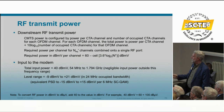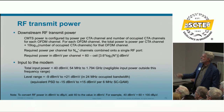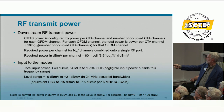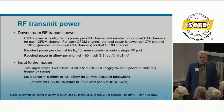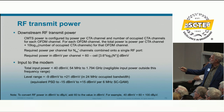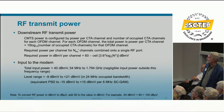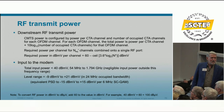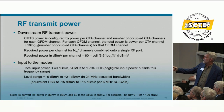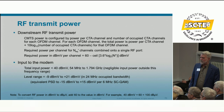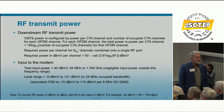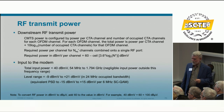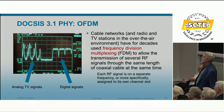Input to the cable modem: total input power must be less than 40 dBmV. The signal level range is -9 to +21 dBmV in a 24 MHz occupied bandwidth, which gives the equivalent power spectral density to -15 to +15 dBmV per 6 MHz in single-carrier QAM.